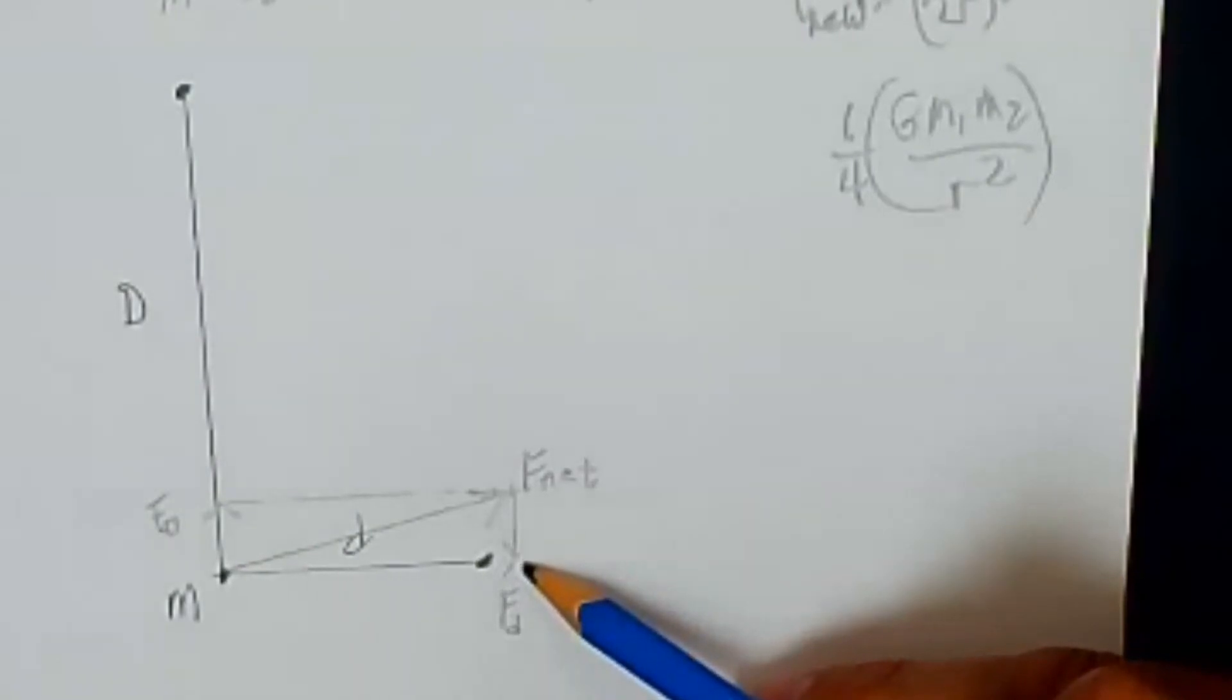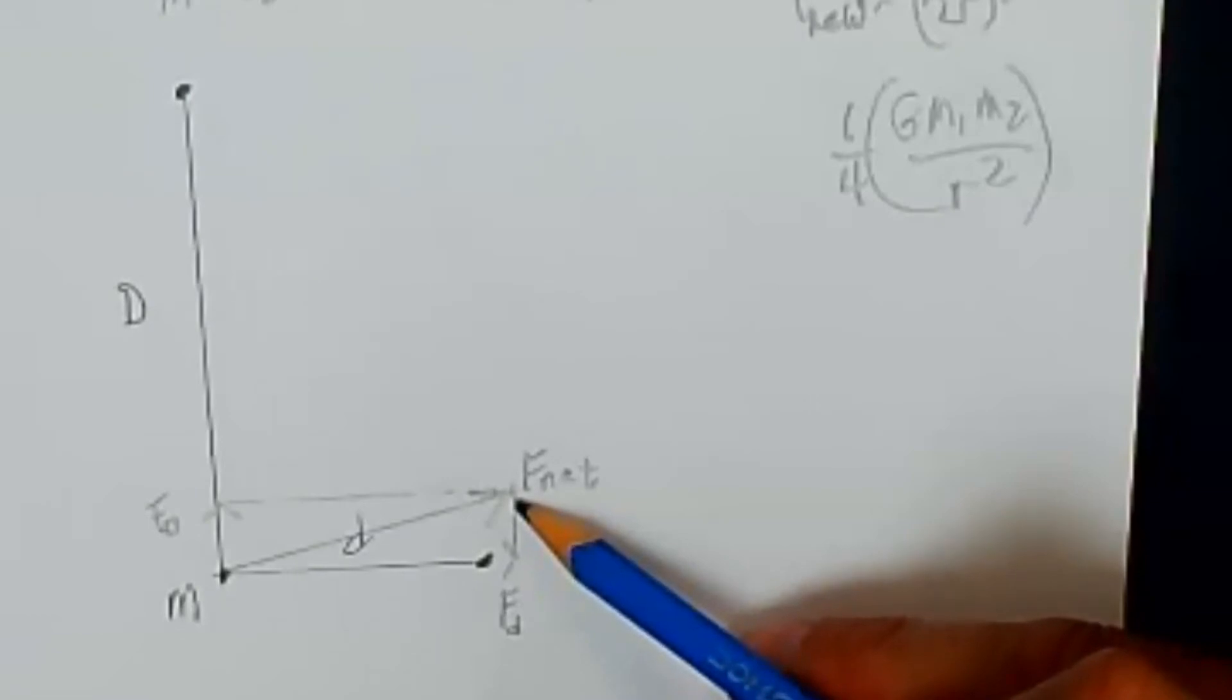And of course, when vectors are at right angles, to add them vectorially, I use the parallelogram rule. So there is my net force right there.